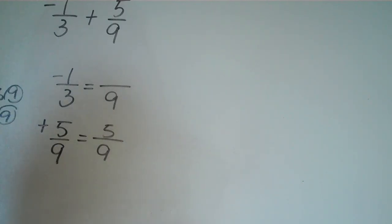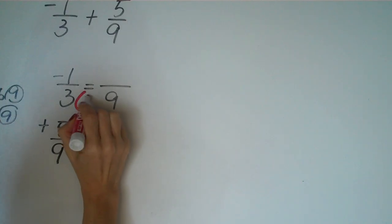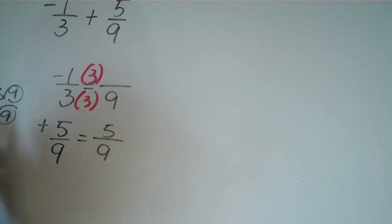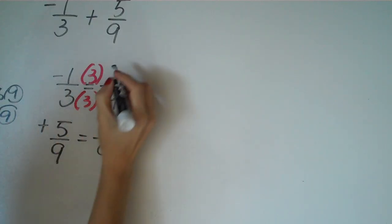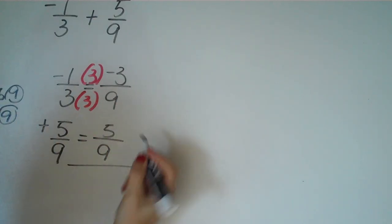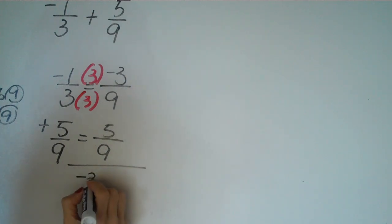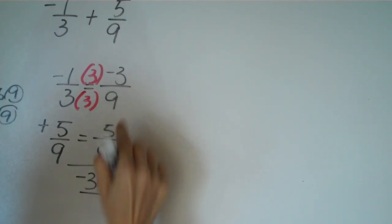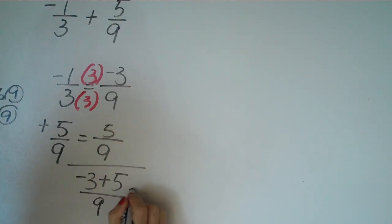But if we look at the first fraction, we're going to have to take that 3 and multiply it by 3. And then we have to do the same thing on the top. And on the top, we get negative 1 times 3 is negative 3. So now we have negative 3 on the top plus 5 all over our denominator of 9. And what we get is different signs. So we're going to subtract and we get 2 over 9 as our final answer.